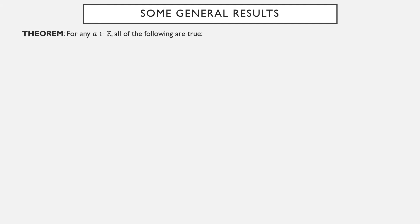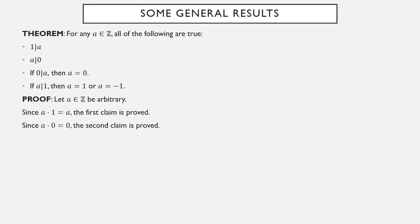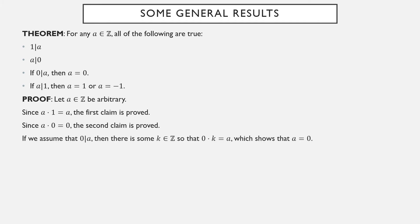Now that we have the definition of factoring, let's go over some general results. For any integer a, all of the following are true: 1 is a factor of a; a is a factor of 0 (this one catches some people by surprise); if 0 is a factor of a then a must equal 0; and if a is a factor of 1 then a is either +1 or −1. Let a be any integer. A times 1 equals a, so 1 is a factor of a. A times 0 is 0, so a is a factor of 0. If 0 is a factor of a, then 0 times k equals a, but 0 times k is 0, therefore a equals 0.